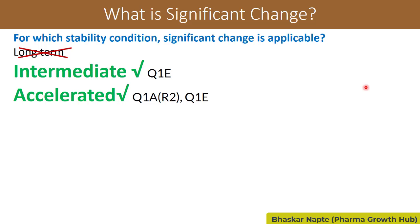The reference for this can be found in ICH guideline Q1E. If you go through ICH guideline Q1E — which is about evaluation of shelf life for drug substance or drug product — you will find the guideline mentions various scenarios such as if significant change occurs at intermediate condition. Hence, we can understand that significant change is also applicable for the intermediate condition.